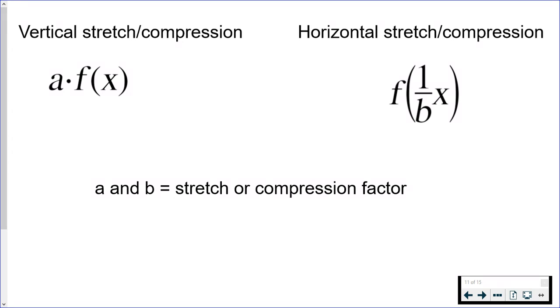Once I show you the graphs it'll make a little more sense. These two notations are what you need to know when applying either a vertical or horizontal stretch or compression to your function. For vertical, you multiply the function by the stretch or compression factor. For horizontal, the factor is applied to your x values and it's actually the reciprocal of the factor. I'm going to go over some examples so hopefully it makes more sense once you see this in action.